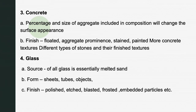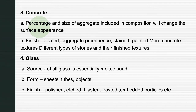Glass: all glass is essentially melted sand. Glass and mirror are available in sheets, tubes, and different objects like vases, decorative household items, and crockery. Different types of glass are used, and finished forms include polished, etched, blasted, frosted, embedded particles, stained glass, blinds, and tinted glass — all are used in designing and painting.